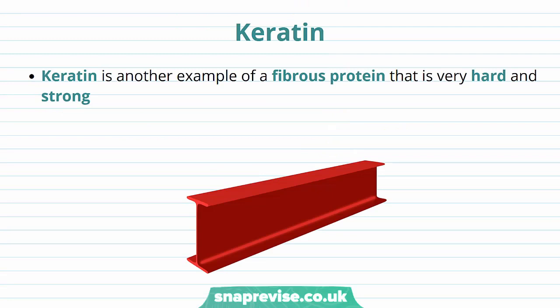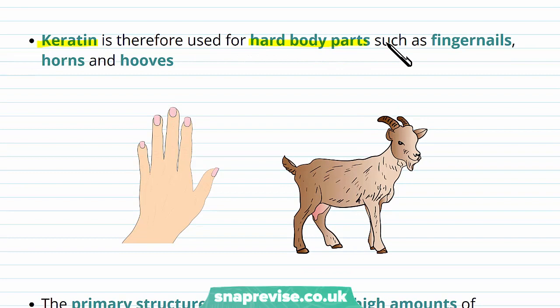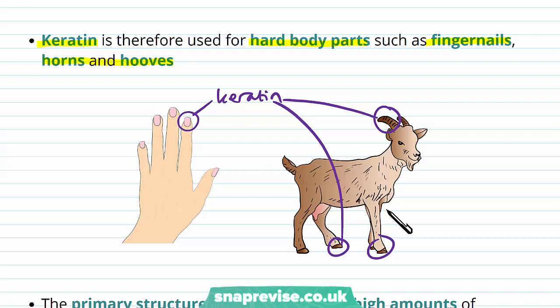Another important example of a fibrous protein is keratin. Keratin is very hard and very strong — hardness means it's difficult to damage, and strength means it's harder to break. We therefore see keratin in parts of the body which are hard, such as fingernails, or horns and hooves on animals like a goat. These tend to be places exposed to forces and mechanical damage, so they need to be hard and strong.